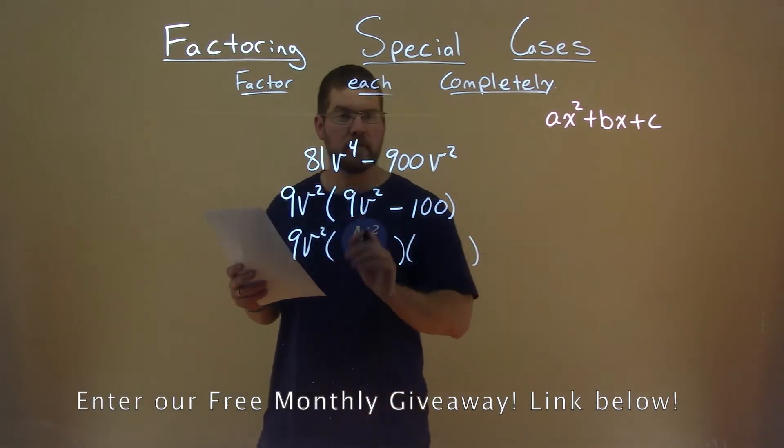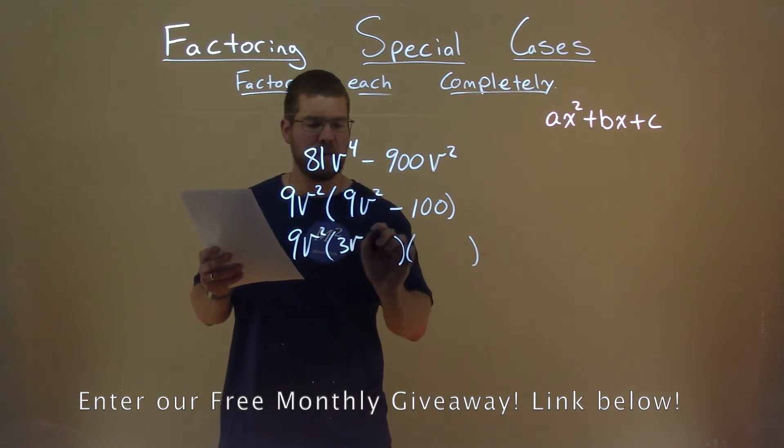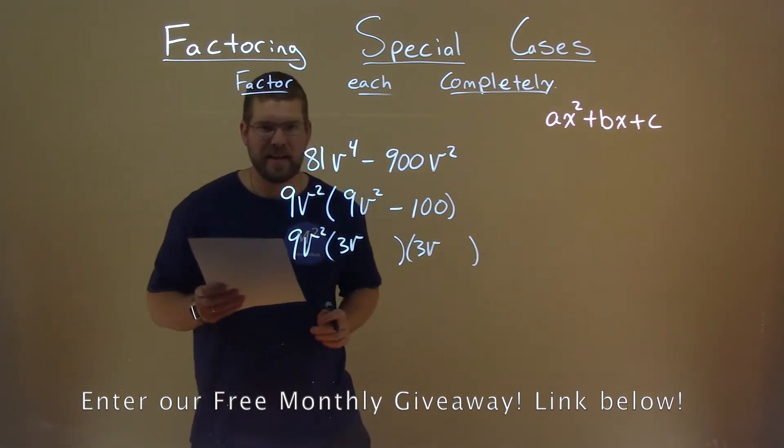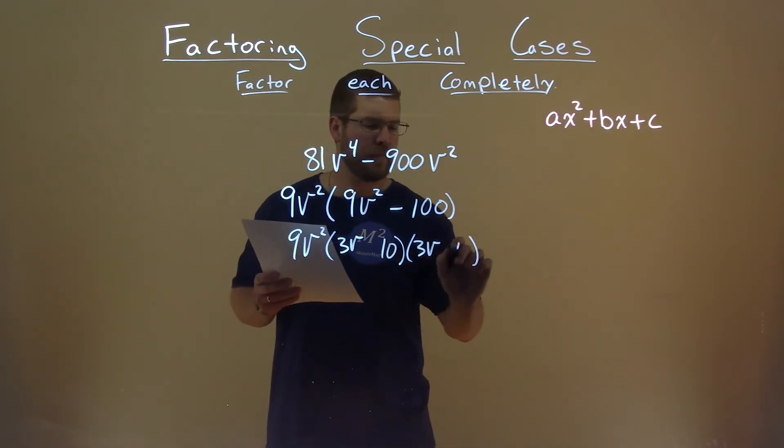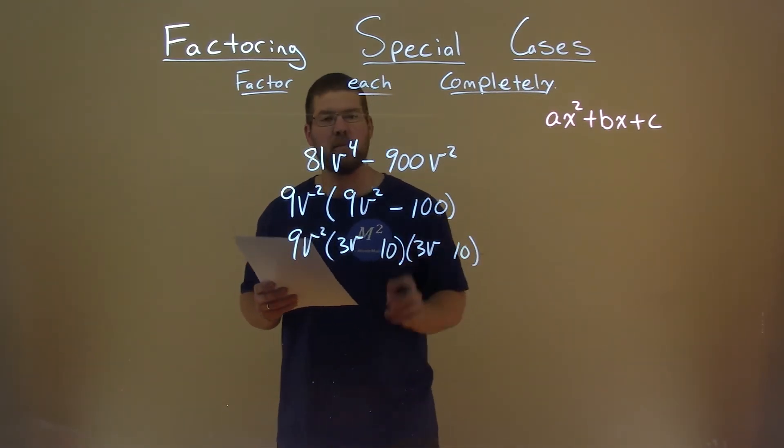9v squared, square root of that is 3v. 3v times 3v is 9v squared. Square root of 100 is 10. Put a 10 here and 10 here. 10 times 10 is 100.